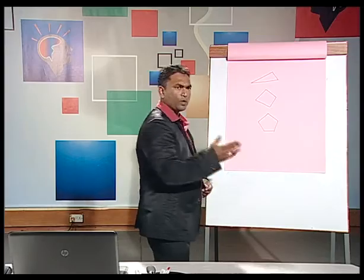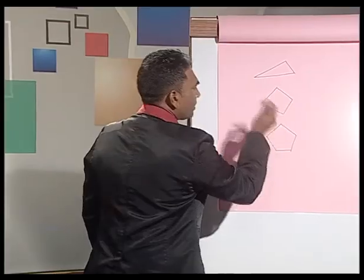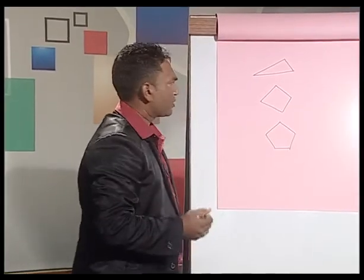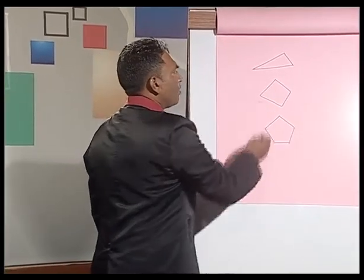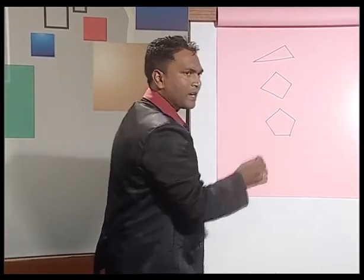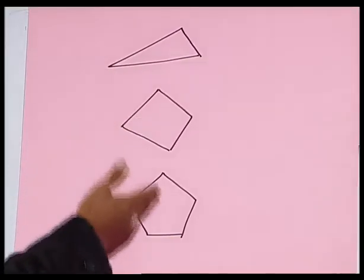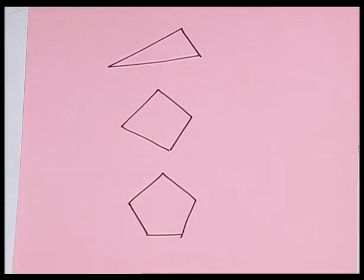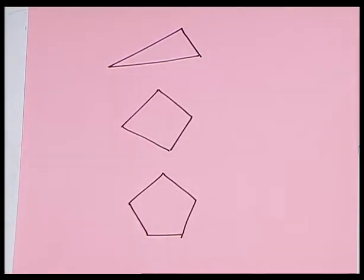So, you can see that we have different polygons — that is, polygons with different numbers of sides. Since we have different polygons, there must be different names for these polygons.